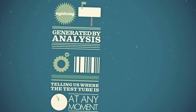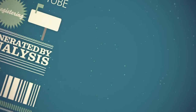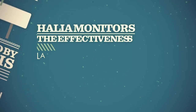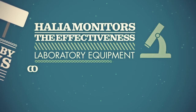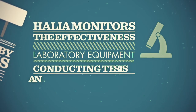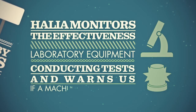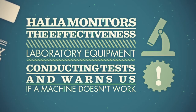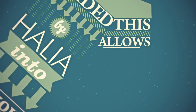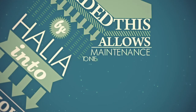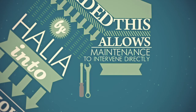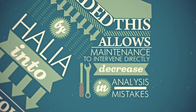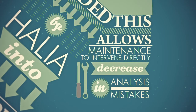In this same phase and at the same time, HALYA monitors the effectiveness of all laboratory equipment, conducting tests and warns us if a machine doesn't work properly or isn't correctly registering the tests. This allows maintenance to intervene directly and involves a decrease in analysis mistakes made in a laboratory where HALYA is used.